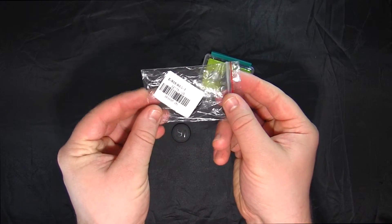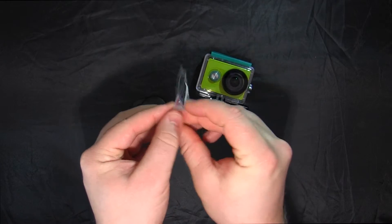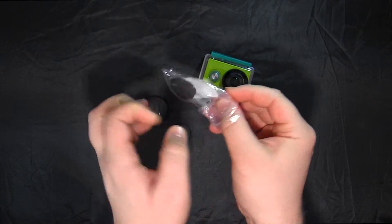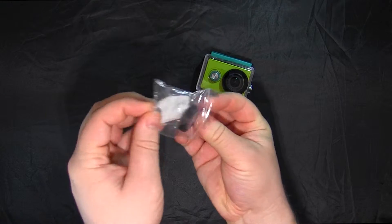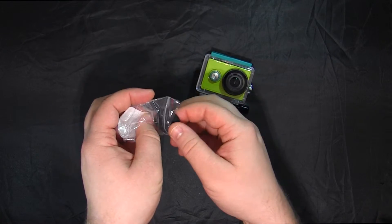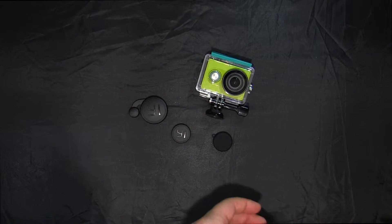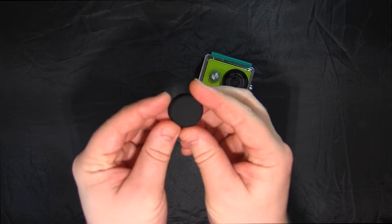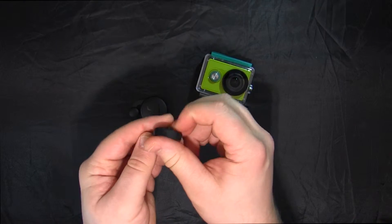Ну и хочу вам показать еще одну крышечку для объектива, которая мне показалась интересной. В отличие от предыдущих крышечек, это сделано из силикона. Очень мягенькая.